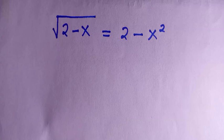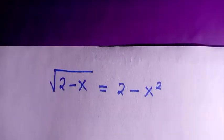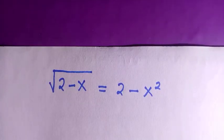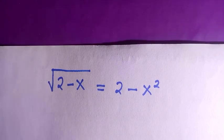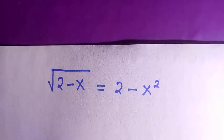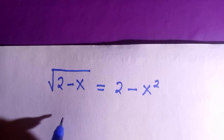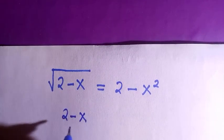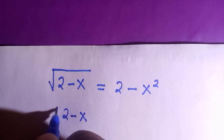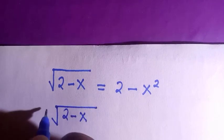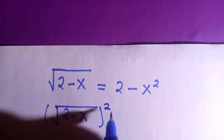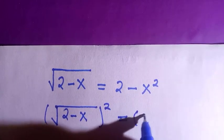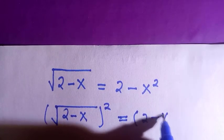Welcome to another video. In this system of radical equations, we want to solve for all the values of x that satisfy this. The first thing we're going to do is take the square of both sides to cancel the square root. So we have the square root of 2 minus x, and we take it to the power of 2.